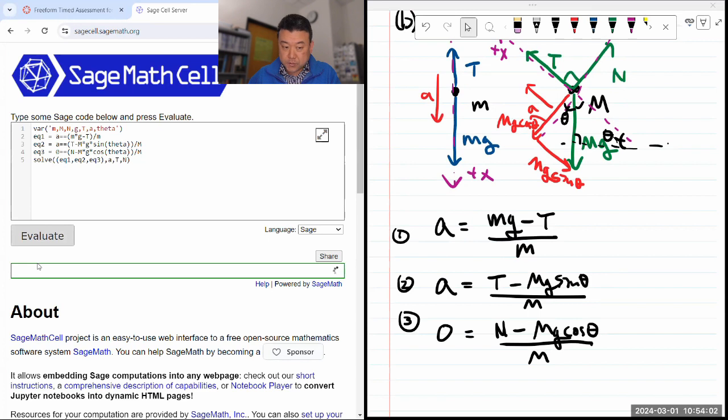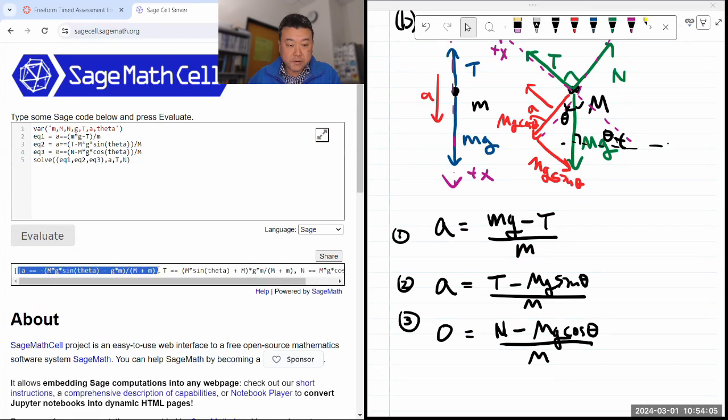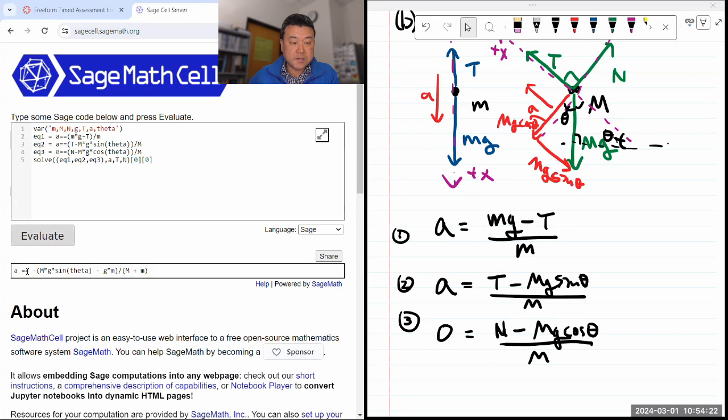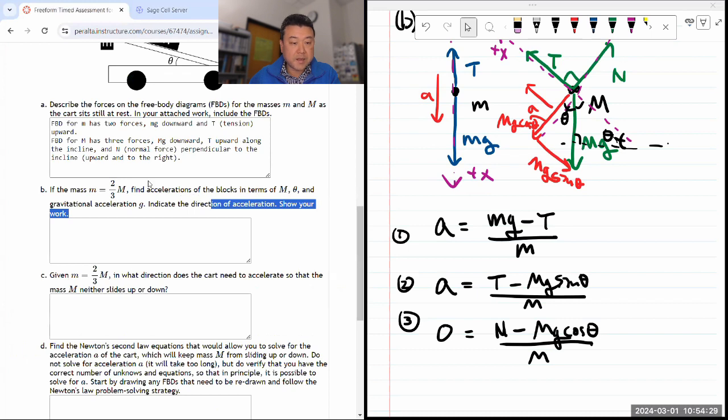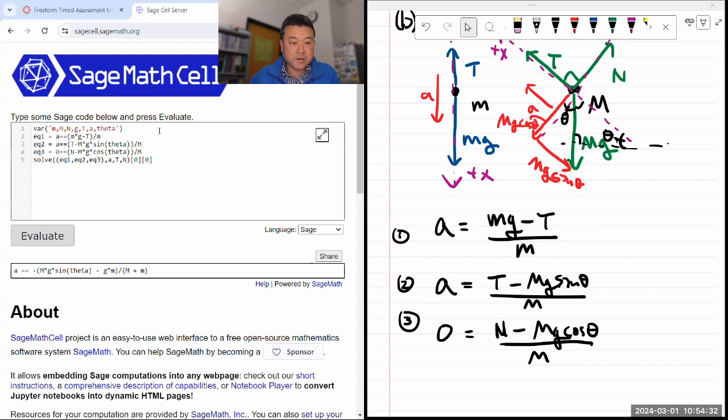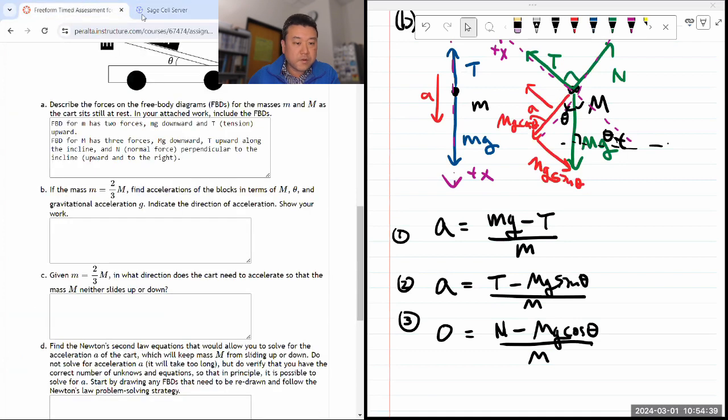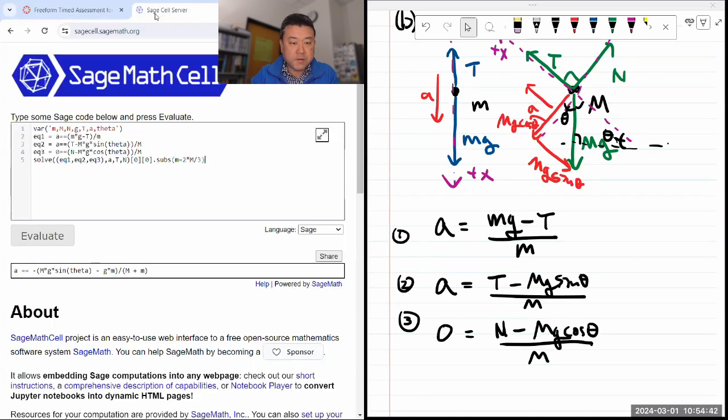With that, now it'll give me a solution. Solution of the acceleration and tension and normal force. Only one acceleration. So I'll just to get at the zeroth element, which is the system of solutions. And then of that first element, which is the acceleration. So that gets me that. Now, what it's asking for is find the acceleration in terms of m theta. I need to plug in small m is equal to that. So let's do that. Let's substitute small m is equal to 2 over 3 big M.